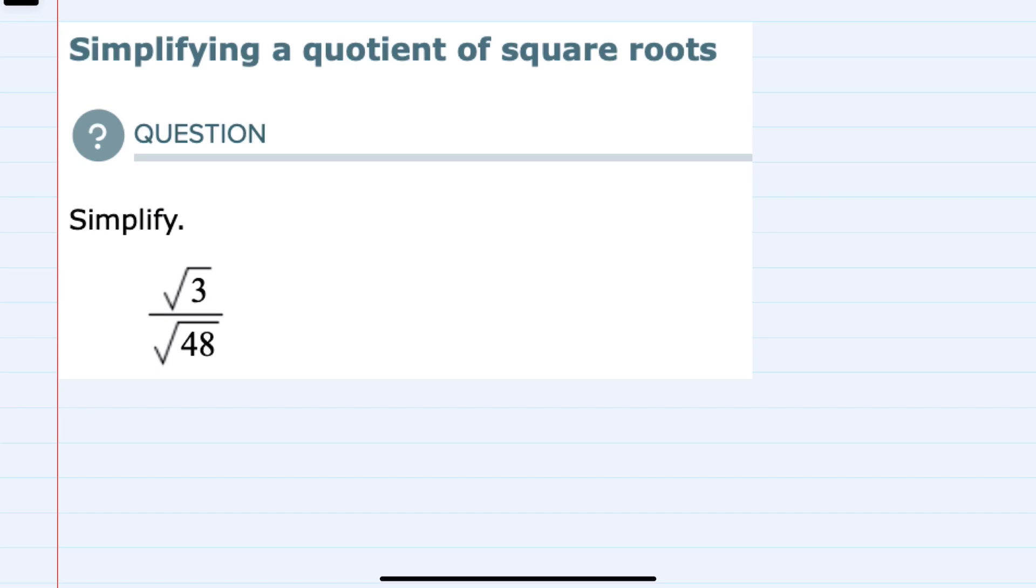In this video I'll be helping you with the ALEKS problem type called simplifying a quotient of square roots. Here we have the square root of 3 divided by the square root of 48.